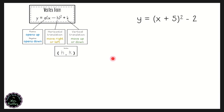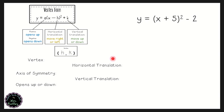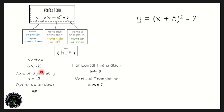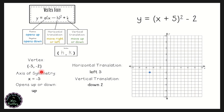For y equals the quantity x plus five, squared, minus two: x plus five means x minus negative five, so h equals negative five and k equals negative two. The vertex is at (-5, -2). The axis of symmetry is x equals negative five. The a value is positive one, so this opens up. The horizontal translation is to the left five and down two. Starting at the vertex (-5, -2), we apply the odd-numbered pattern going upward: left one up one and mirror, left one up three and mirror, left one up five and mirror, then sketch the parabola.